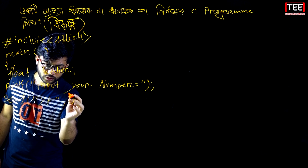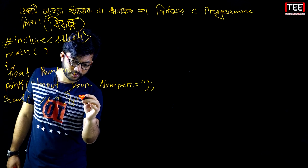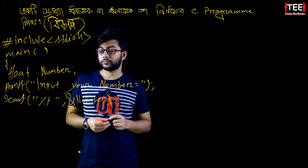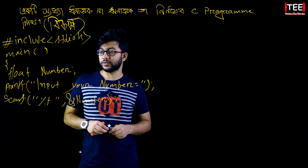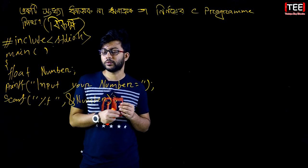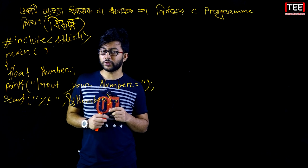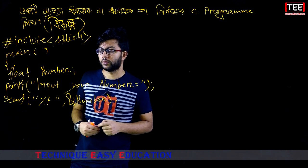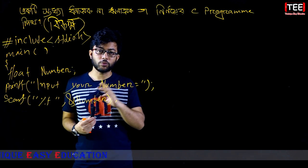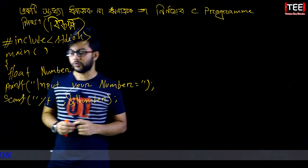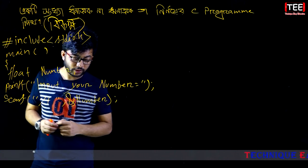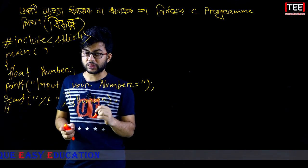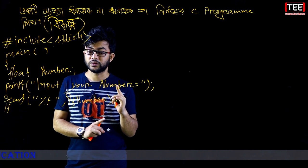The number variable will take the input. Then I need to check if the number is positive, negative, or zero. You enter zero - is zero positive or negative?